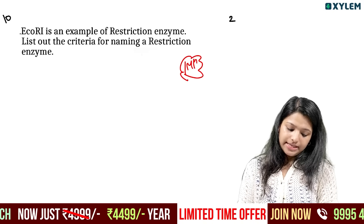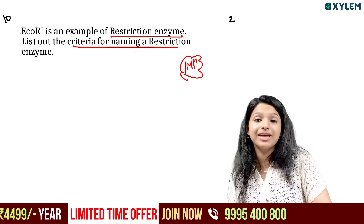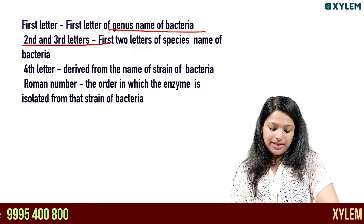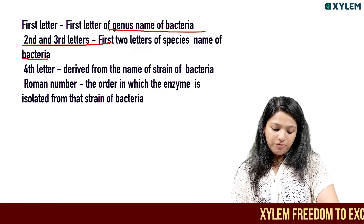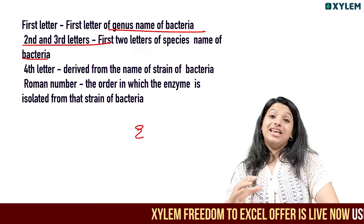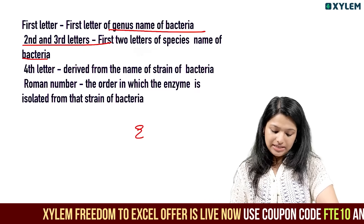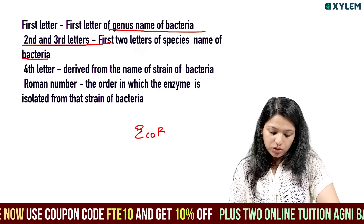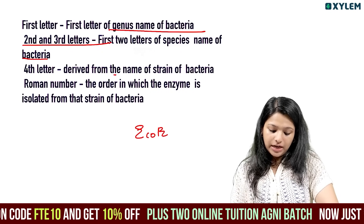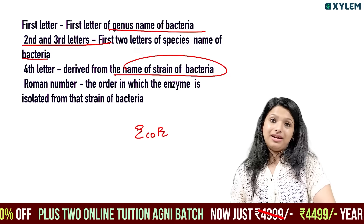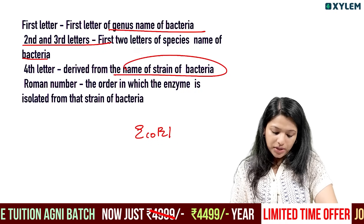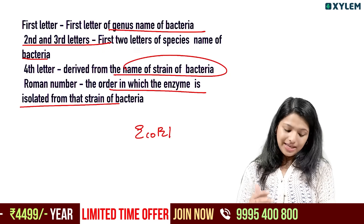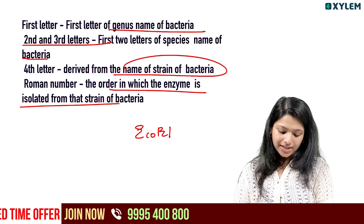EcoRI is an example of a restriction enzyme. List out the criteria for naming restriction enzymes. The first letter comes from the genus name of the bacterium, the second and third letters come from the first two letters of the species name, and the fourth letter is derived from the name of the strain of the bacterium.